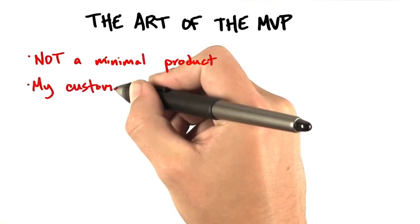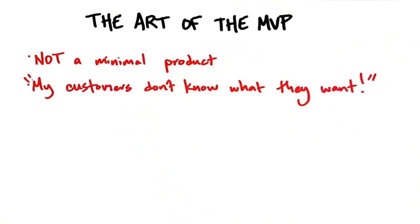Sometimes we get this: my customers really don't know what they want. I'm creating something so new, getting out of the building is just a waste of time because if I show them my solution, they're not even going to know what planet I'm talking about. We're going to be talking about the problem of market type in a subsequent lecture.